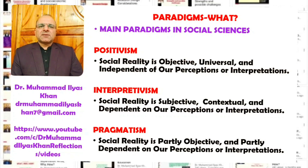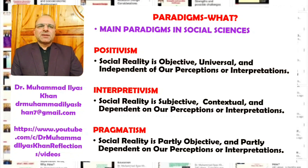The third paradigm is called pragmatism, and academics who believe in it are called pragmatists. Here, the interpretation is that social reality is partly objective and partly dependent on our perceptions or interpretations. Some researchers argue that social reality is subjective, but our knowledge of it is based on subjective ways of knowing, so there are elements of both objectivity and subjectivity in the nature of social reality.